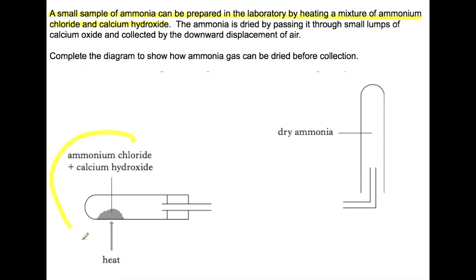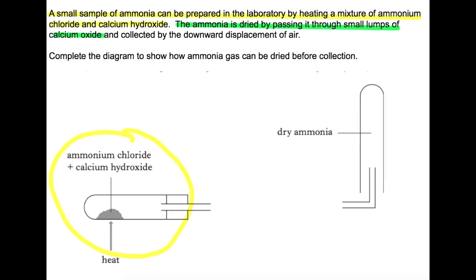And you can see that that's what's happening in this first section here. We've got ammonium chloride and calcium hydroxide in a boiling tube and they're being heated and then the gas is going to come out of this tube here. The second part says the ammonia is dried by passing it through small lumps of calcium oxide. So we don't have anything to show how it's being dried, and the question asks you to complete that part. And then the final section says it's collected by the downward displacement of air. So it's less dense than air. So it's going to go up into this tube here.